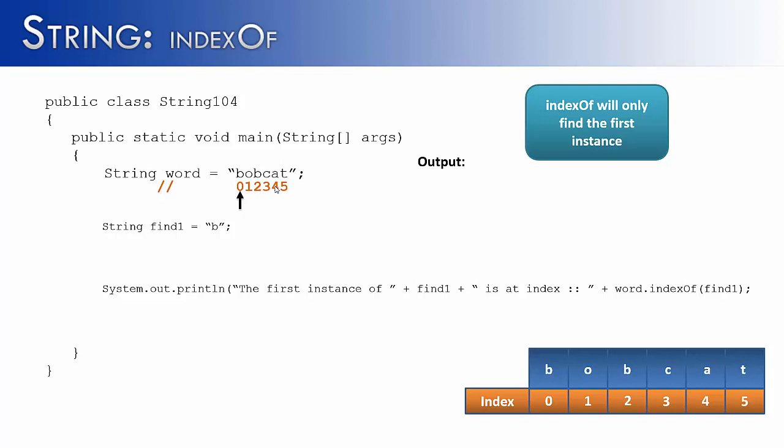IndexOf will only return the first instance of B. So it would return 0 in this case, not 2. So it would say the first instance of B is at index 0.